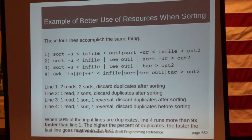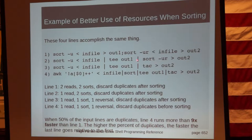For the third line, we ask the same question: how can we accomplish the same thing but ask the computer to do less? Instead of reverse-sorting that data stream again, it's already sorted. If we acknowledge that this file and this file are reverses of each other, we can use the tac command — all it does is list out the lines backwards. Listing the lines backwards is less resource-intensive than doing a complete new sort.